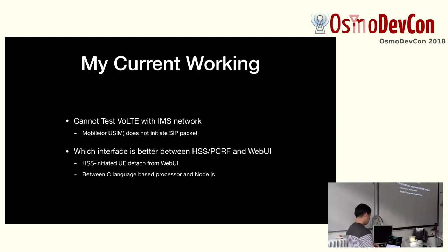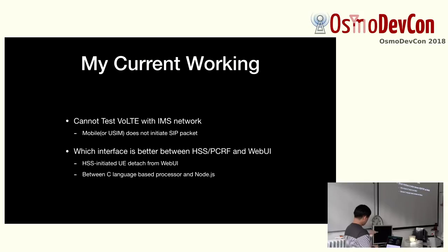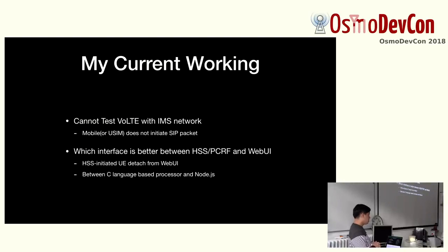Currently I'm working on implementing the VoLTE function. Initially I was planning to use the Kamailio project for testing, but I could not generate C packets no matter how I set up the SIM or phone — it does not work. I'm also considering how to communicate between the web UI and HSS/PCRF, thinking about modifying configuration files on the web or viewing logs, including subscriber-based logs like Wireshark on the web.